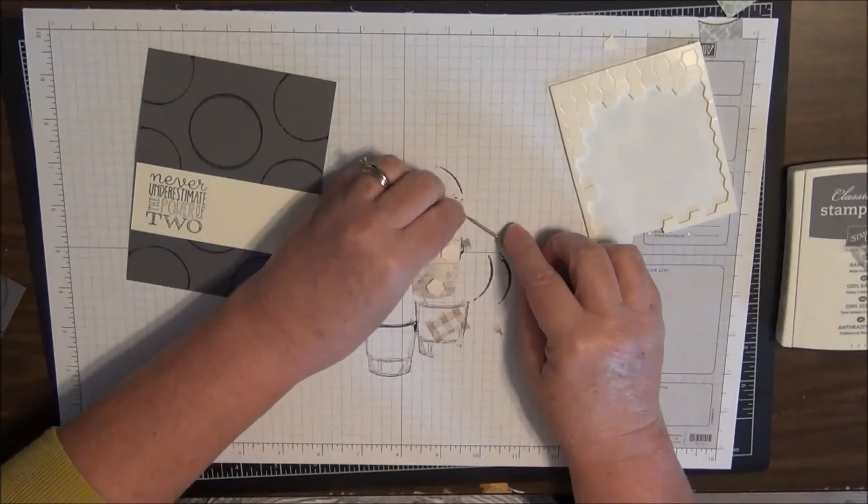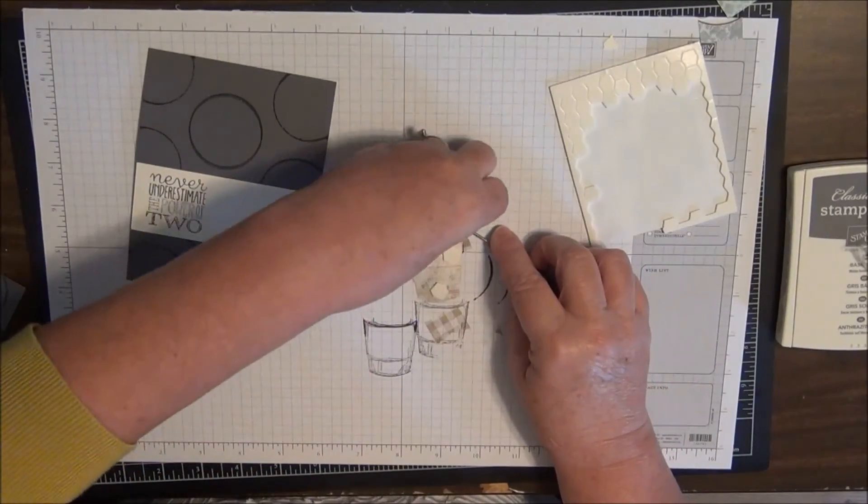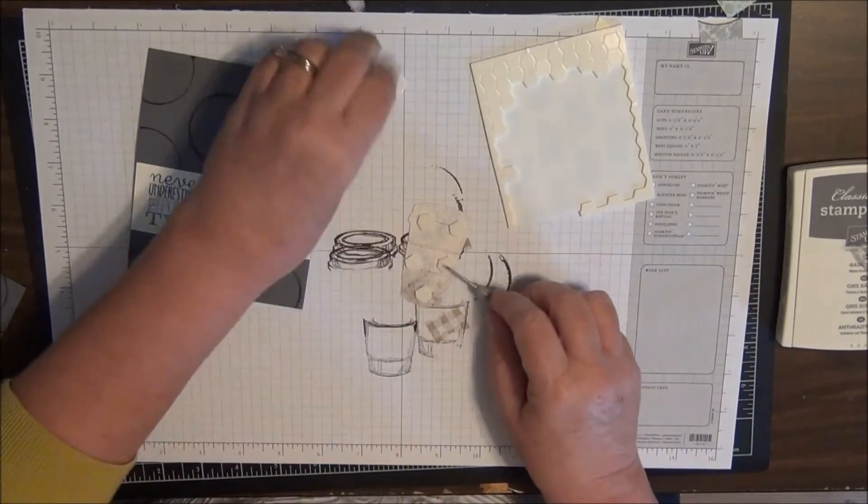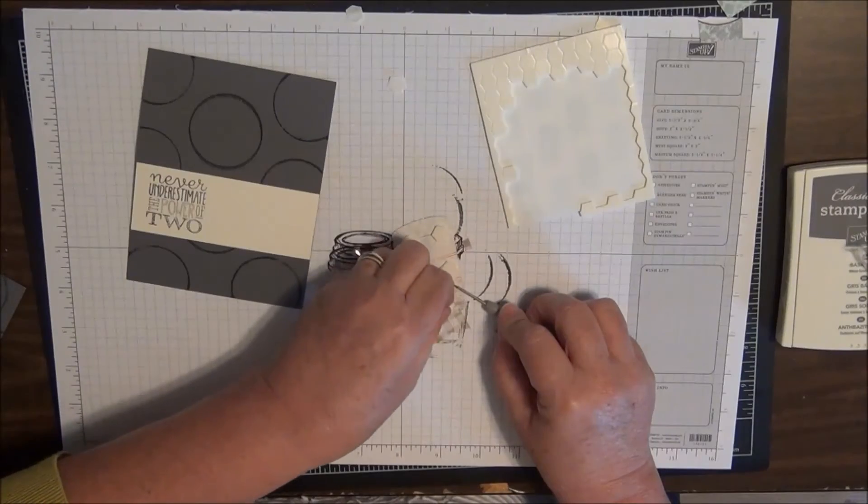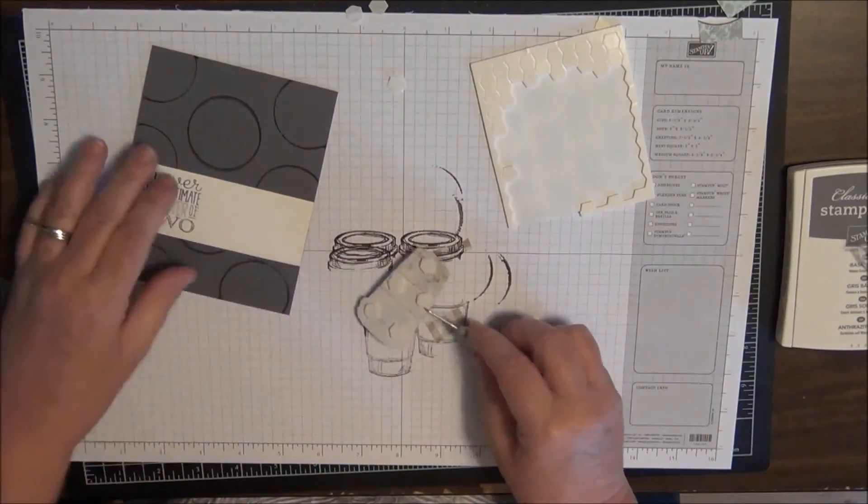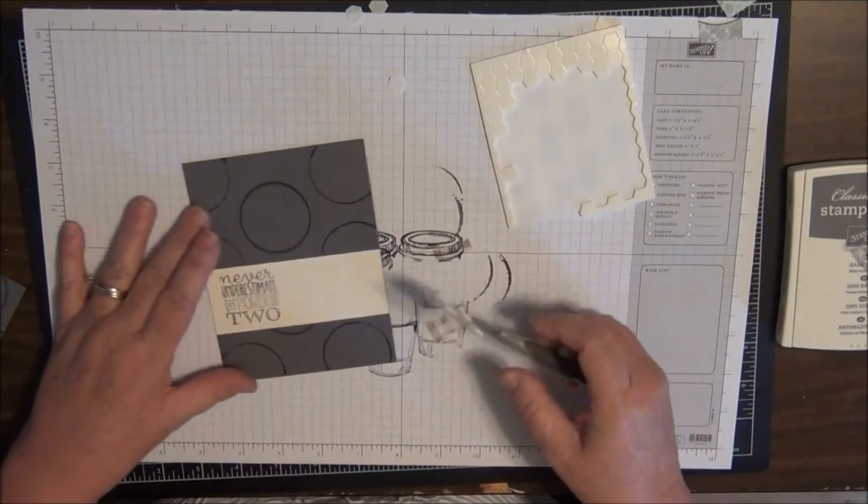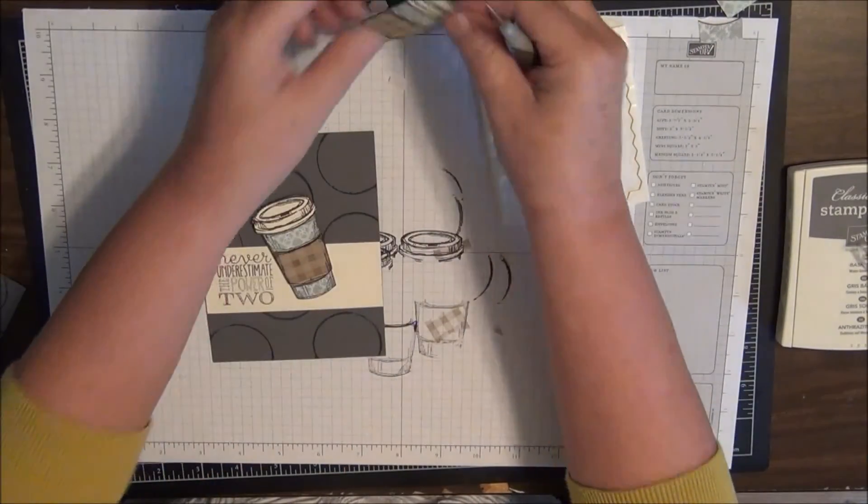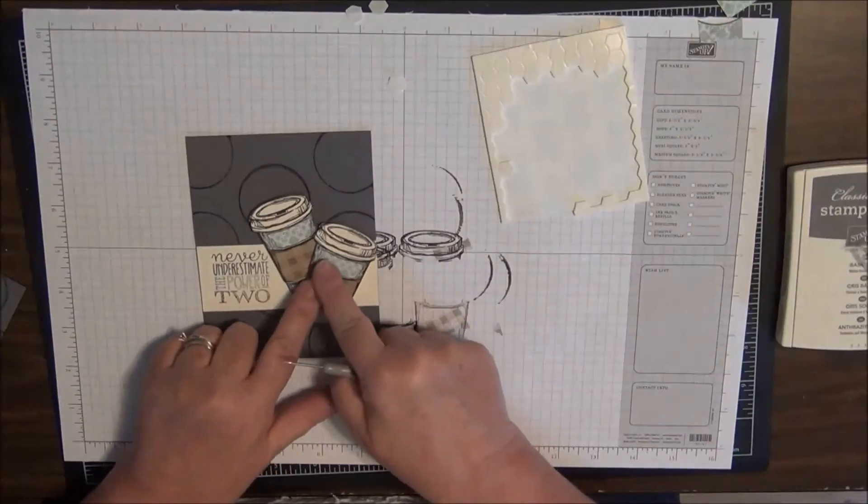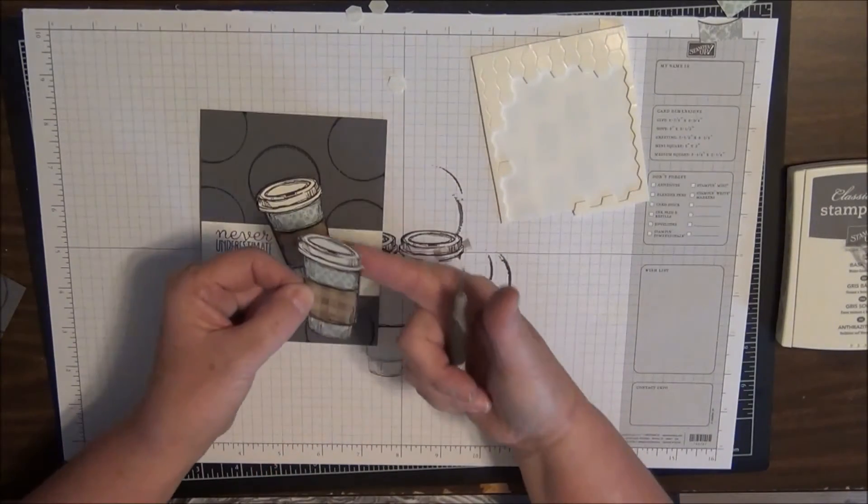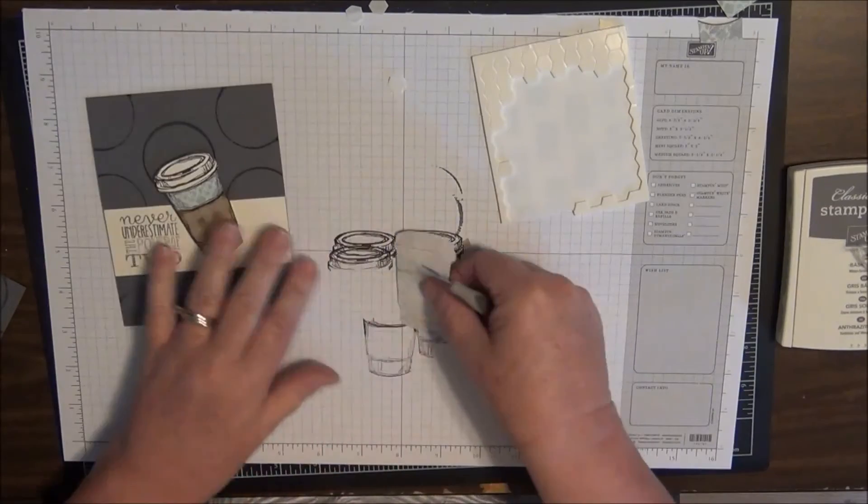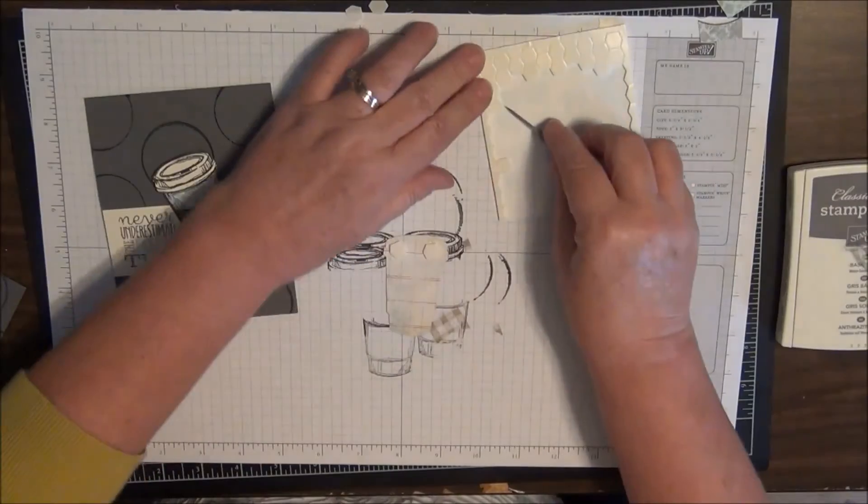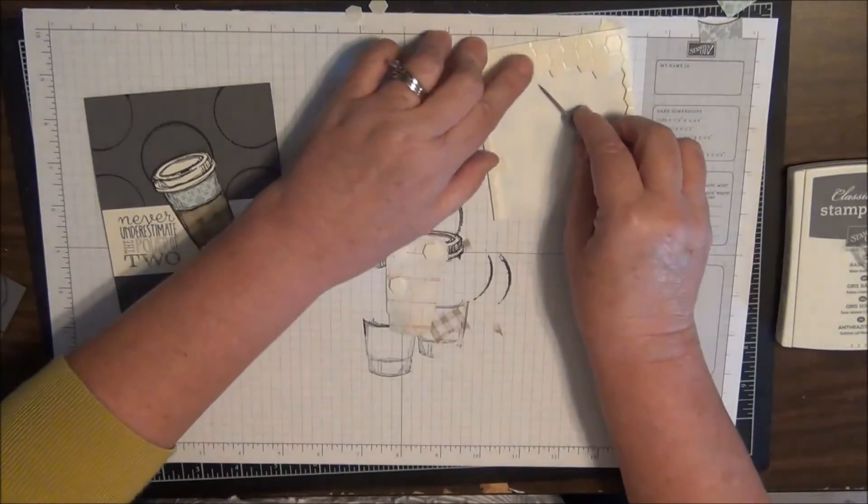And you can use as many dimensionals as you want because they're really inexpensive - you get three sheets for $3.95. And I am a dimensional hound. Okay, so I'm just going to go ahead and tilt my cup like this. Now when I put this one on, see how that's going to layer on top? I don't want to put a dimensional here but I want dimensionals around here. So I'm going to put my dimensionals right around here. Whoops, got an extra one. Take that backing off.